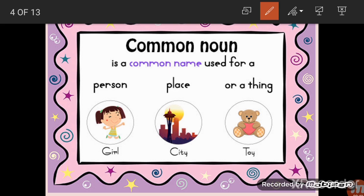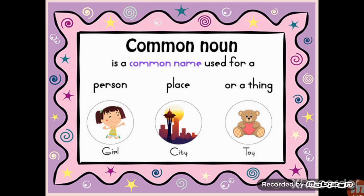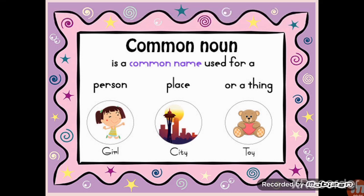Now let's see what common nouns are. A common noun is a common name used for a person, place, or thing. For example, 'city' is a common noun — there are many cities around the world. Karachi, Lahore, and Faisalabad are all cities in Pakistan. 'City' is the common name shared by all of them, while Karachi is a particular name for one specific city.